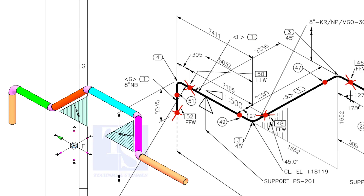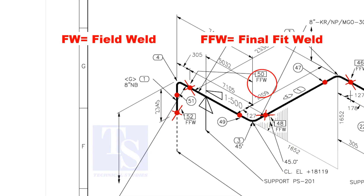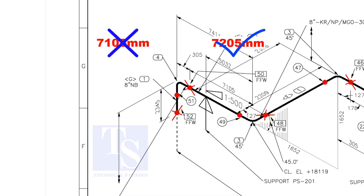In the drawing, you can see the terms FW and FFW. FW stands for field weld. FFW means final fit weld — an additional length of pipe is added to the calculated dimension as an FFW for field trim allowance. As per the drawing, the length of this pipe is 7105 mm, but we will fabricate a minimum length of 7205 mm pipe.